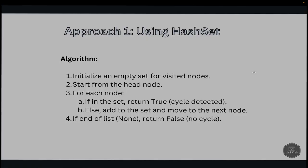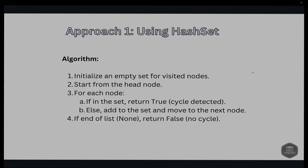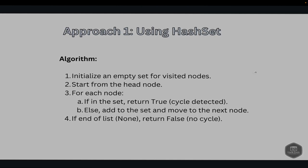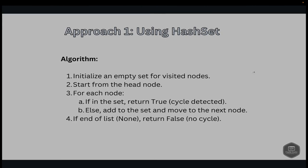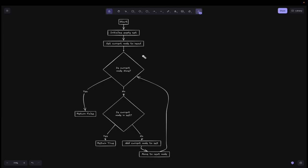Approach 1 uses a hash set. We initialize an empty set to keep track of visited nodes, then traverse the linked list starting from the head. For each node, we check if it has already been visited — if it exists in the set. If the node has been seen before, we return true as a cycle exists; otherwise we add the node to the set and move to the next node. If we reach the end (None), we return false.